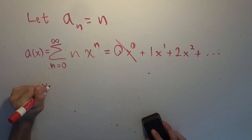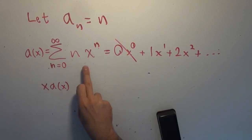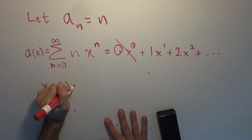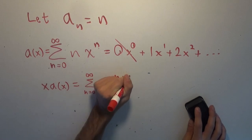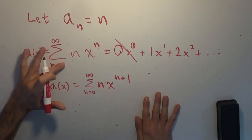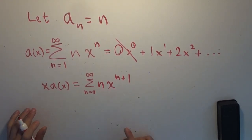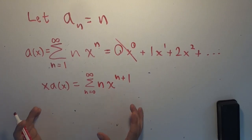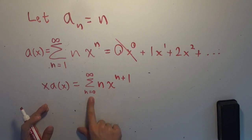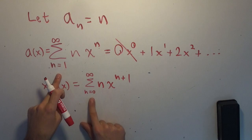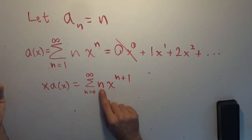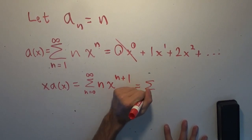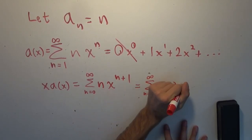x times A of x is simply multiplying the series by x, so the power goes up by one: it's the sum from n equals zero to infinity of n times x to the n plus one. We then do a perspective shift — subtracting one from each of the n's and starting the index at one — and we end up with the sum from n equals one to infinity of n minus one times x to the n.